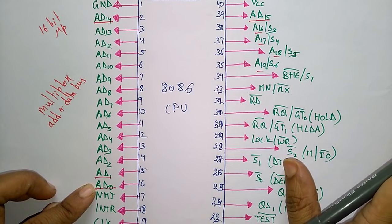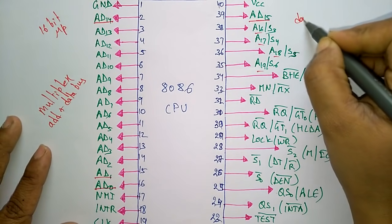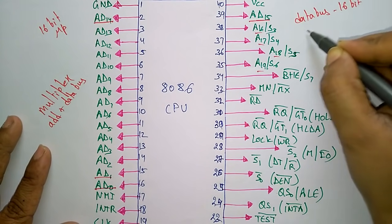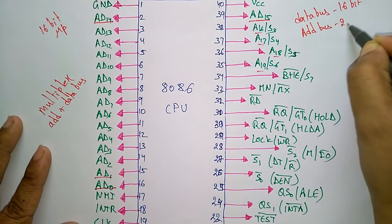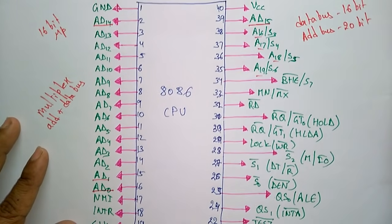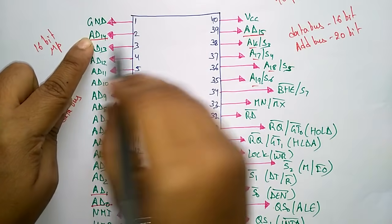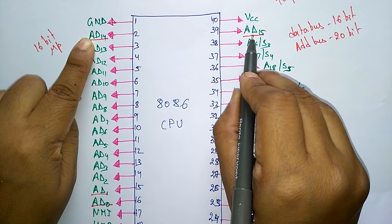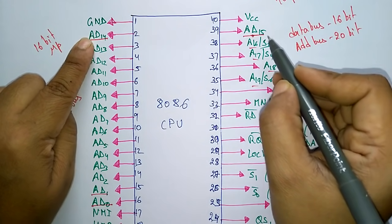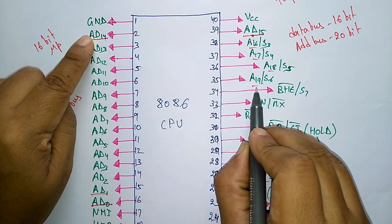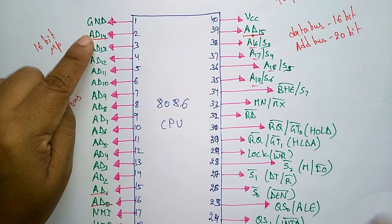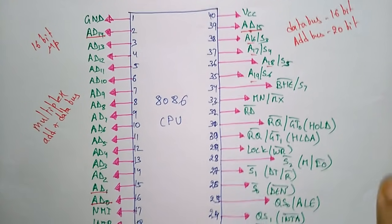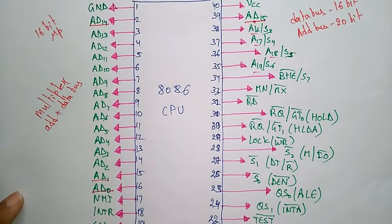The data bus is 16-bit while the address bus handles 20 bits. So AD0 to AD15 (16 lines) are multiplexed, and the remaining 4 bits — A16, A17, A18, A19 — are demultiplexed.